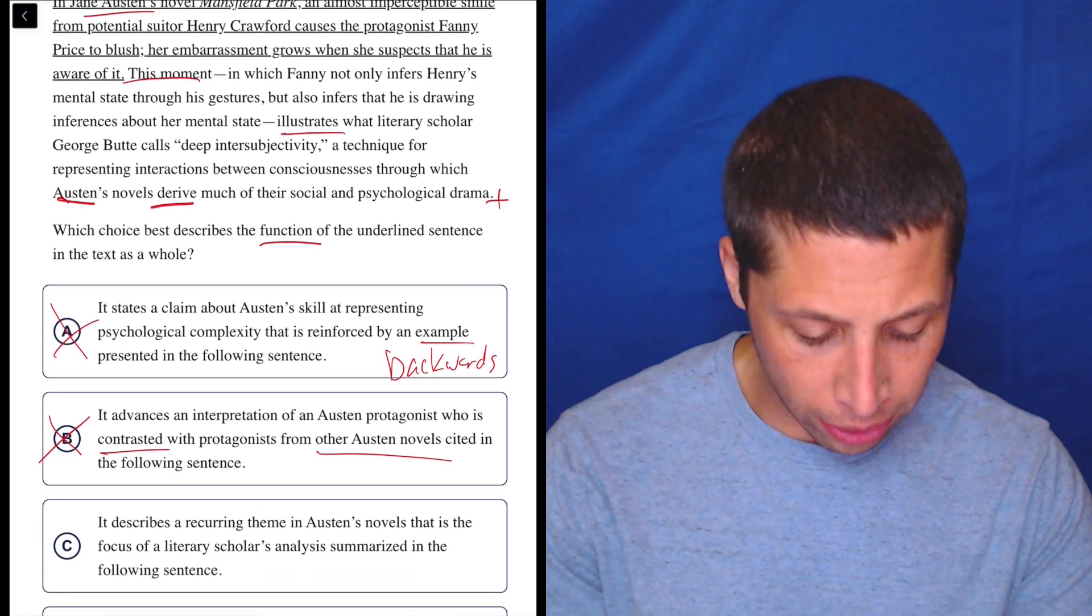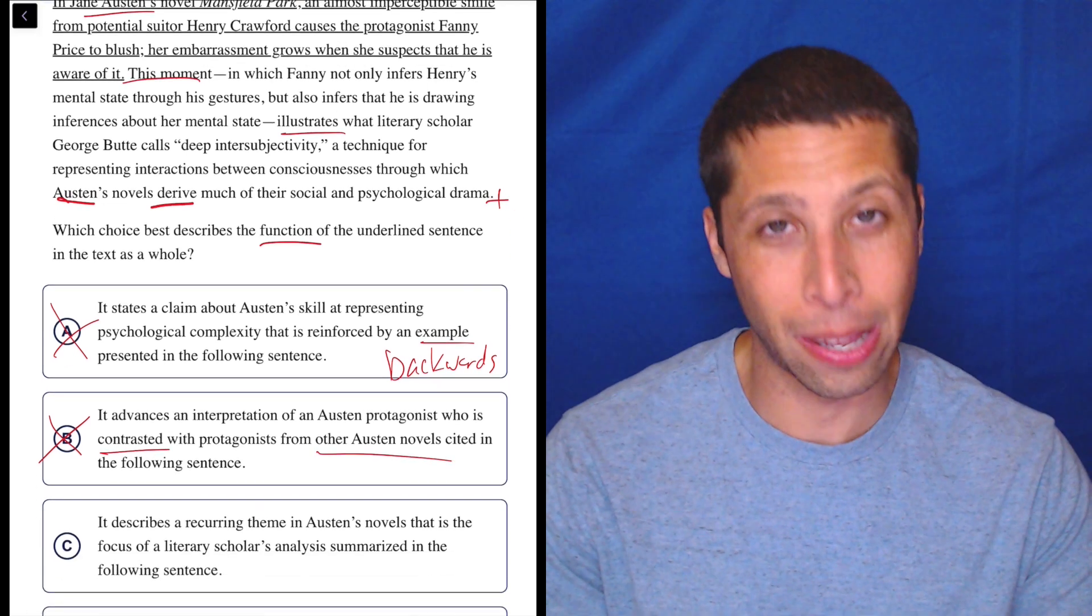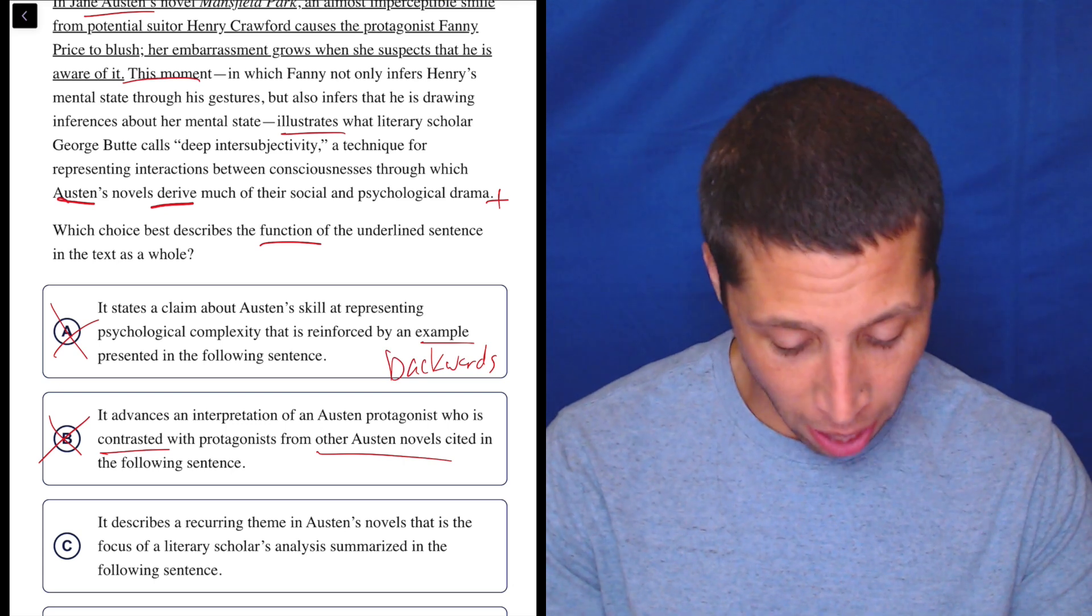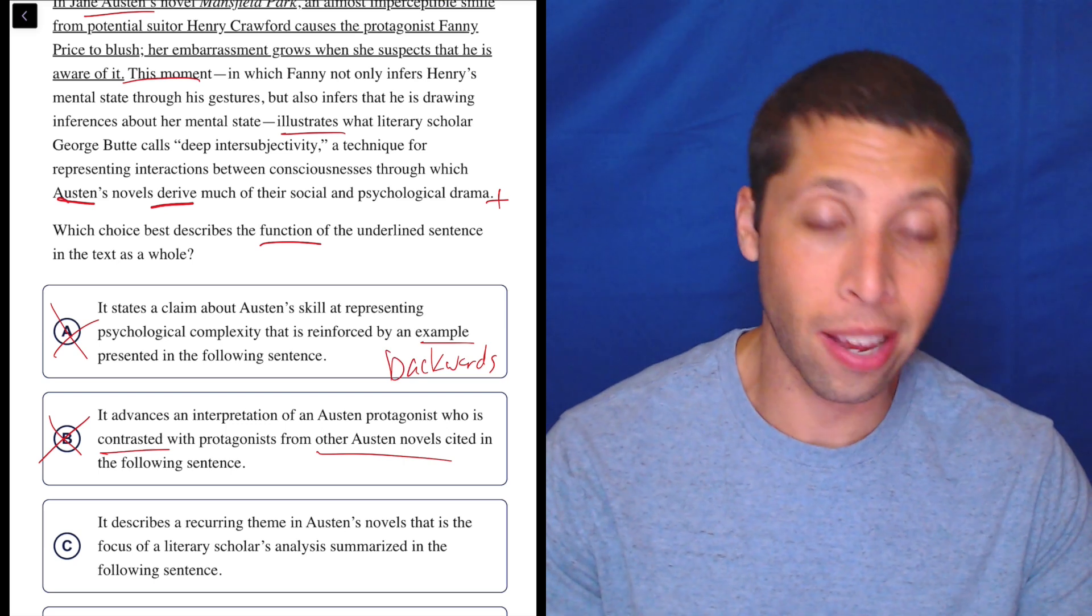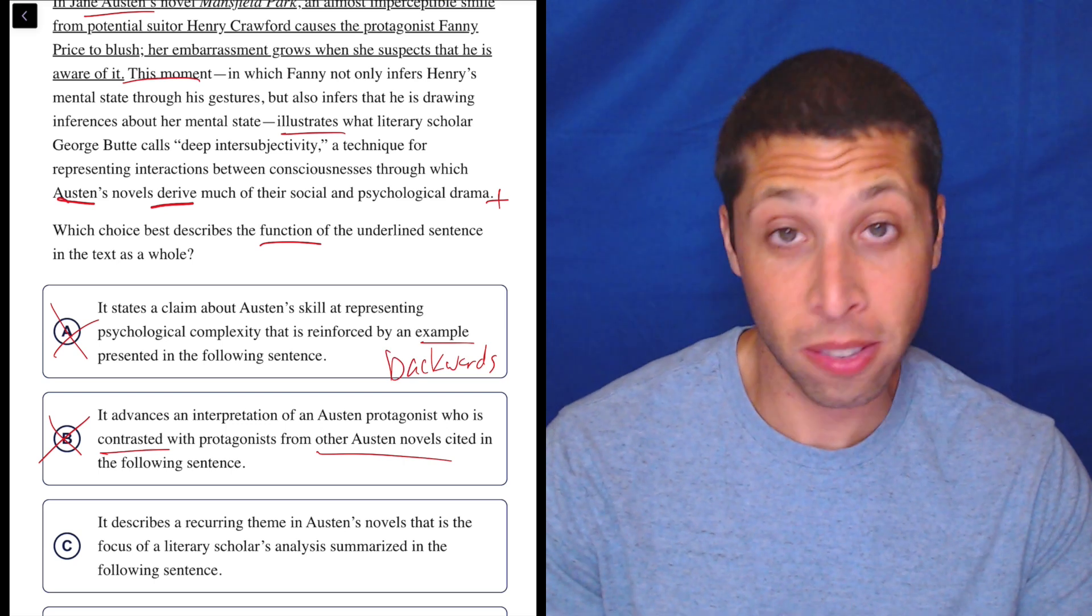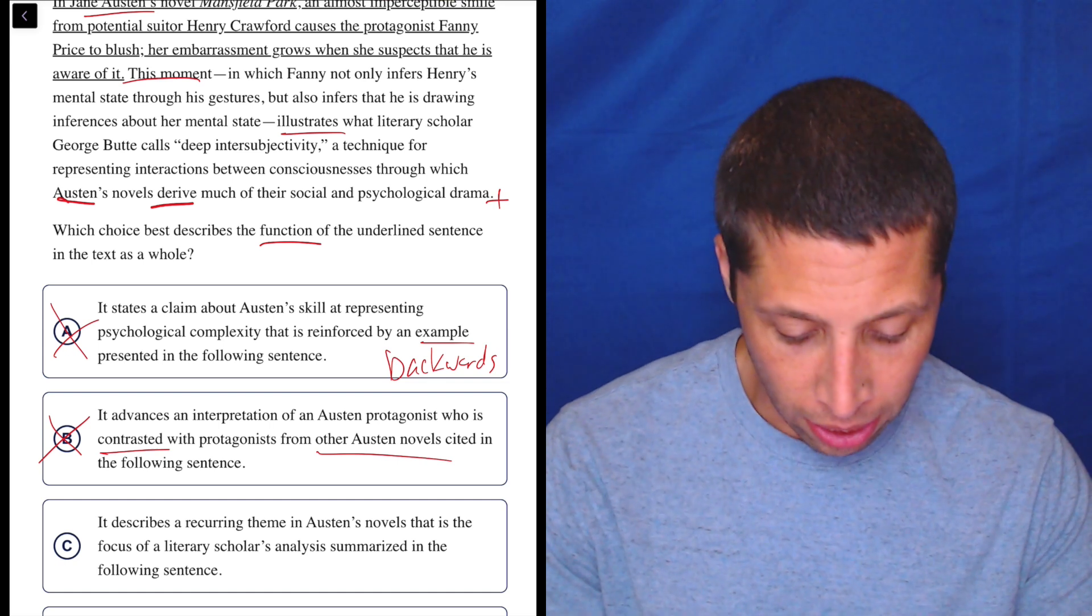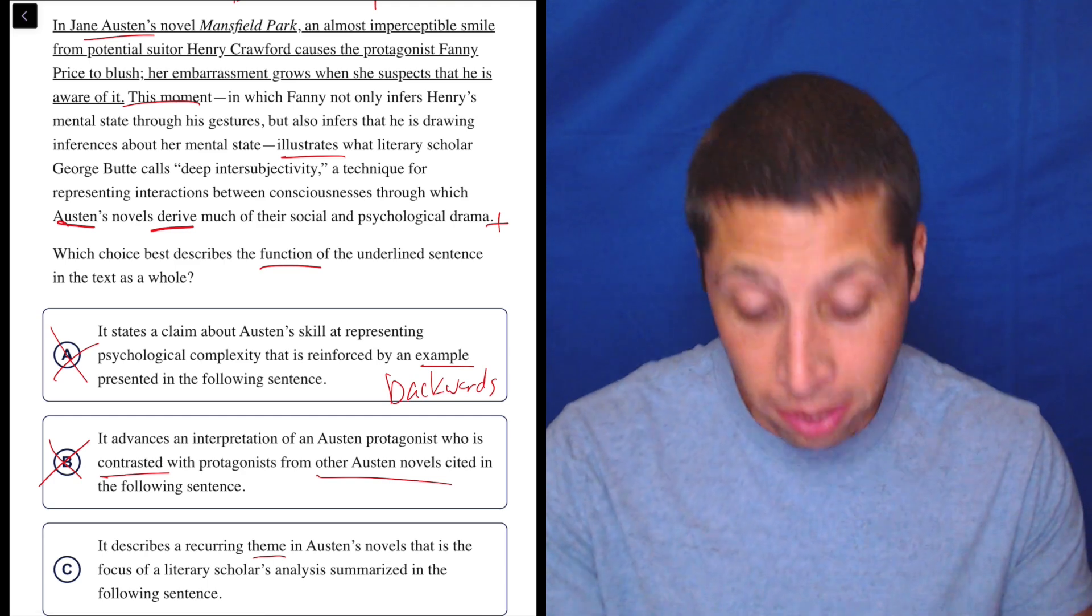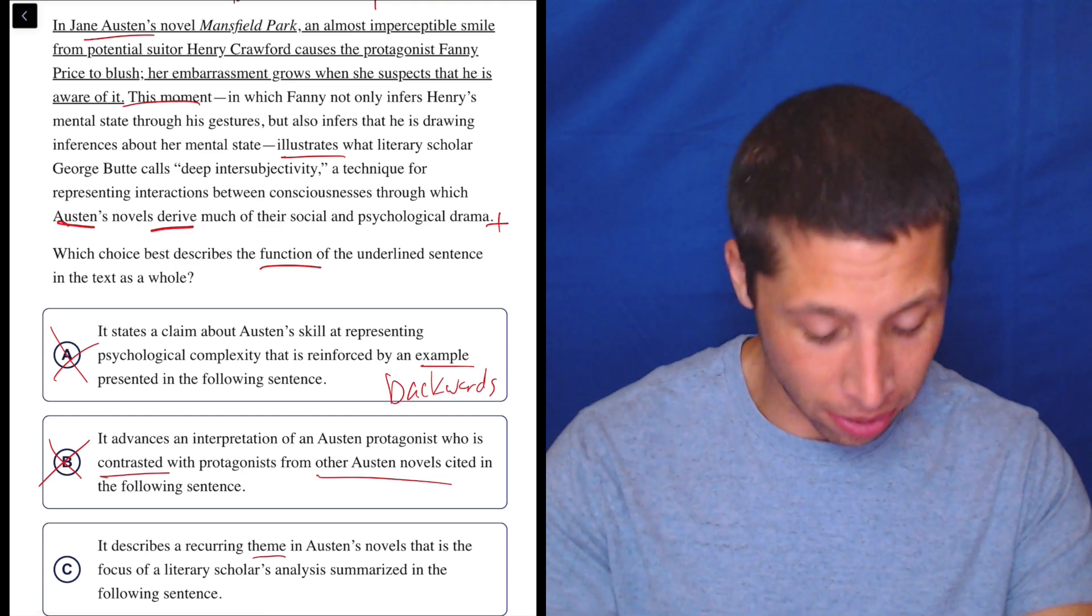C, it describes a recurring theme in Austen's novels that is the focus of a literary scholar's analysis summarized in the following sentence. That seems tempting. I'm going to leave it aside because - is it a recurring theme? I guess they maybe later on say that she uses this thing, this intersubjectivity. I don't love the word theme. It seems more like a moment, an action or something like that, not a theme.